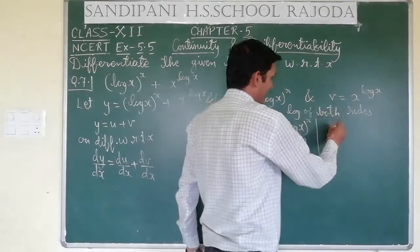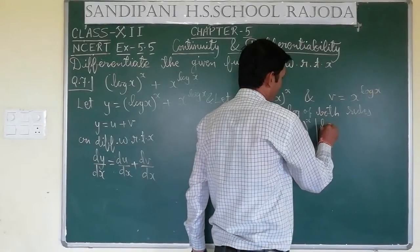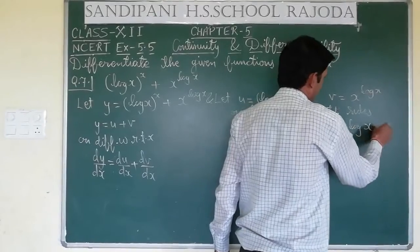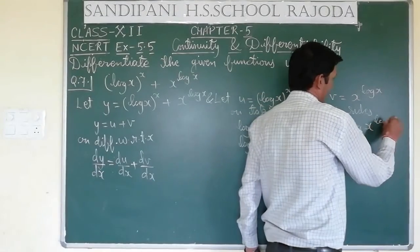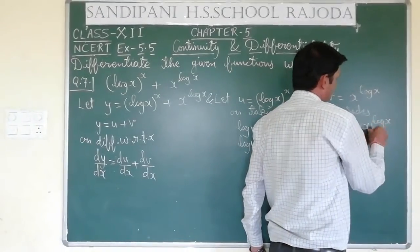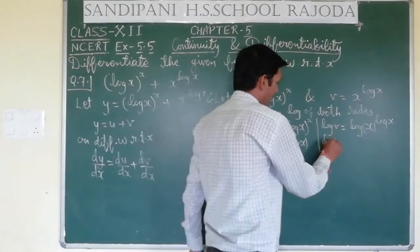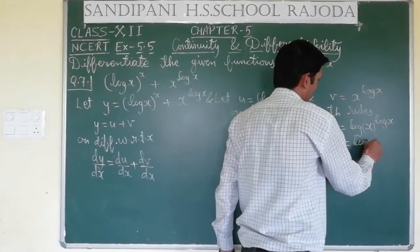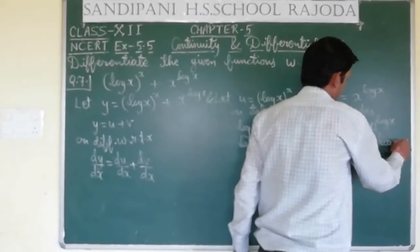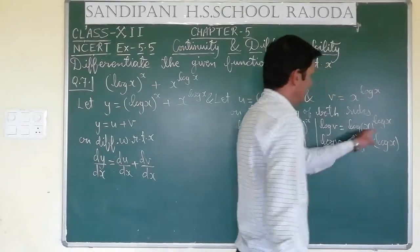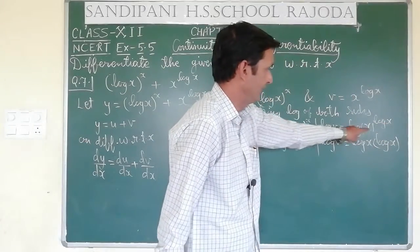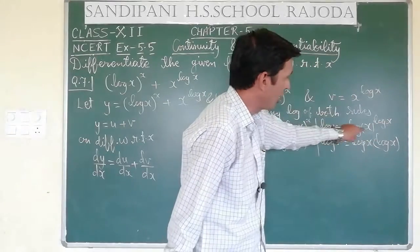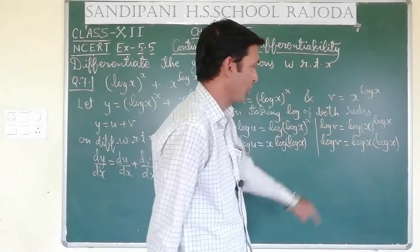Similarly, in the v part: log v equal to log of x raised to the power log x. Here x has log x in the power. So this will become log v equal to log x times log x, which is (log x)². Using the formula log m raised to the power n equals n log m.